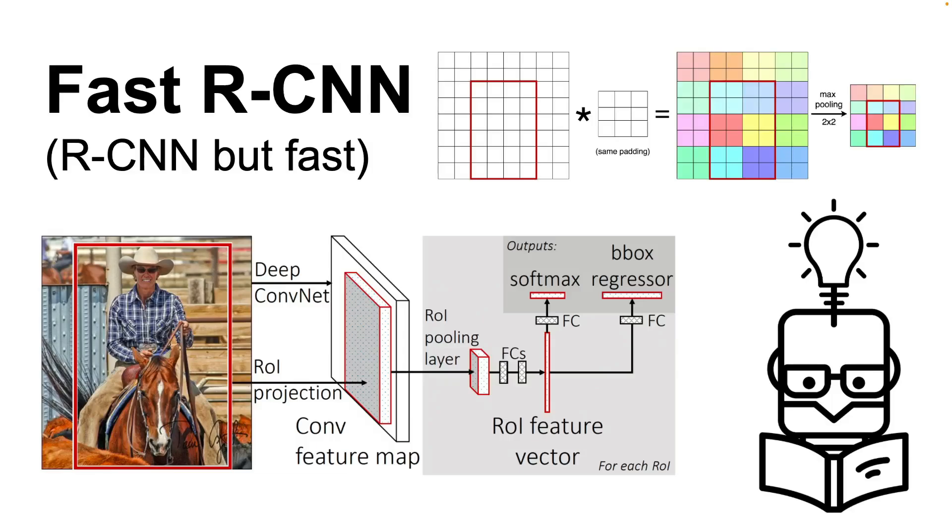As the name suggests, it's a fast version of this model. Please watch the first part in the series about R-CNN if you haven't already because it will make this video much easier to understand.